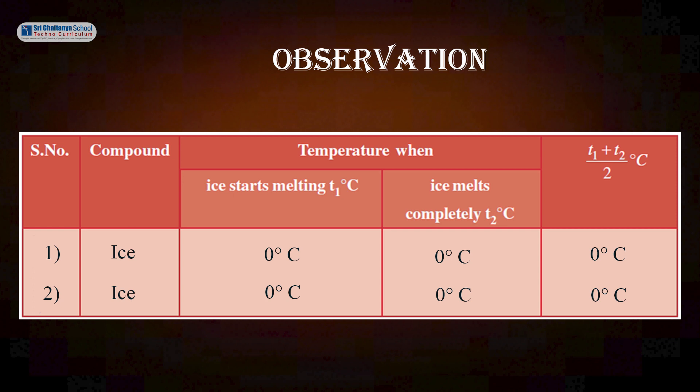The second compound is ice. Ice starts melting at 0 degree centigrade. Ice melts completely at 0 degree centigrade. The mean melting point is 0 degree centigrade.